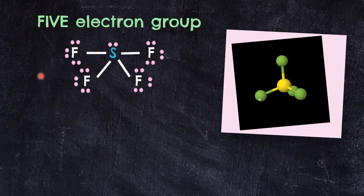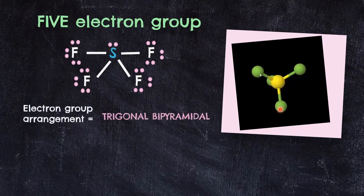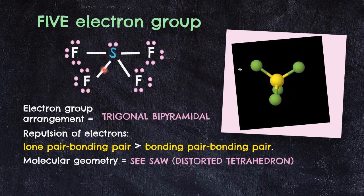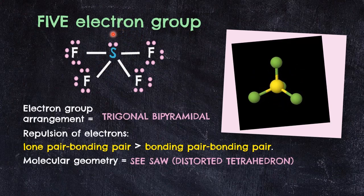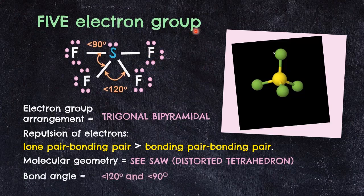Next, sulfur tetrafluoride SF4 has sulfur as the central atom surrounded by 4 fluorine atoms and 1 lone pair, giving 5 electron groups with a trigonal bipyramidal arrangement. The 3D shape is influenced by lone pair–bonding pair and bonding pair–bonding pair repulsions. The lone pair on sulfur pushes the SF bond electrons closer, forming a see-saw geometry, also known as a distorted tetrahedron. The bond angles are expected to be less than 90° in the axial positions and less than 120° in the equatorial positions.